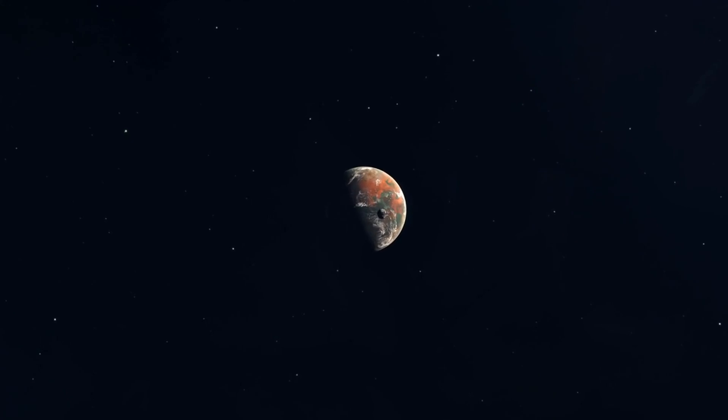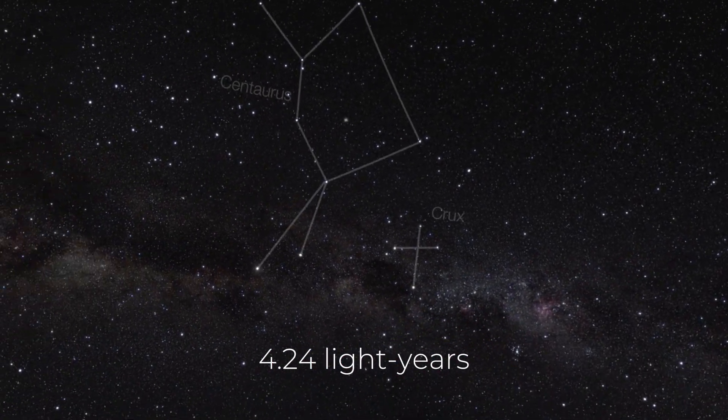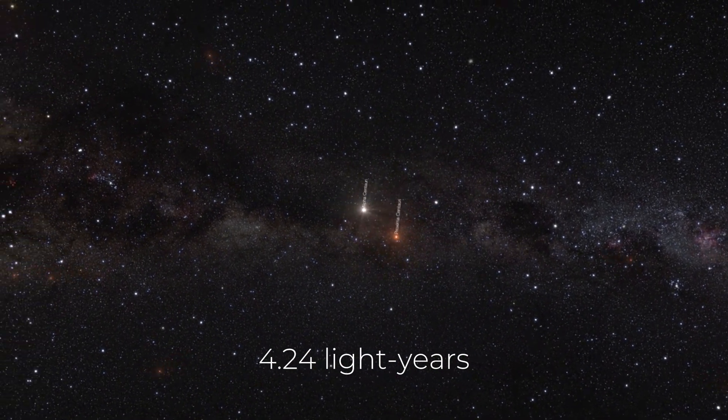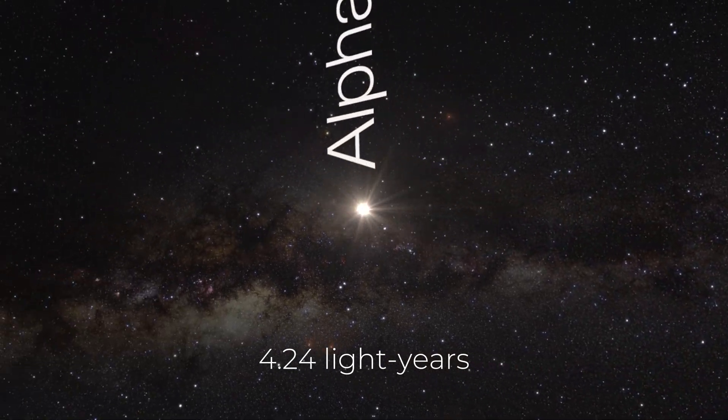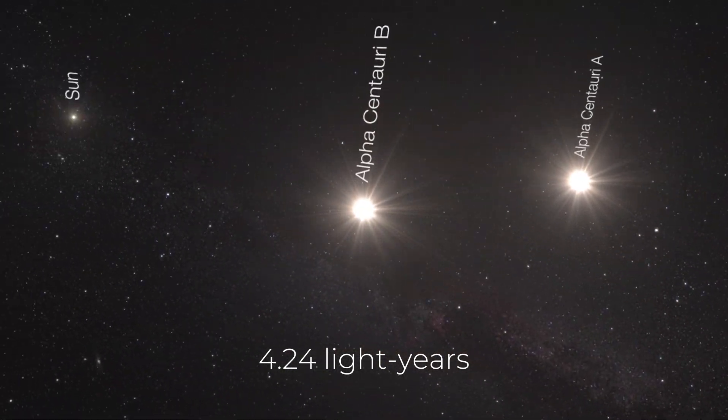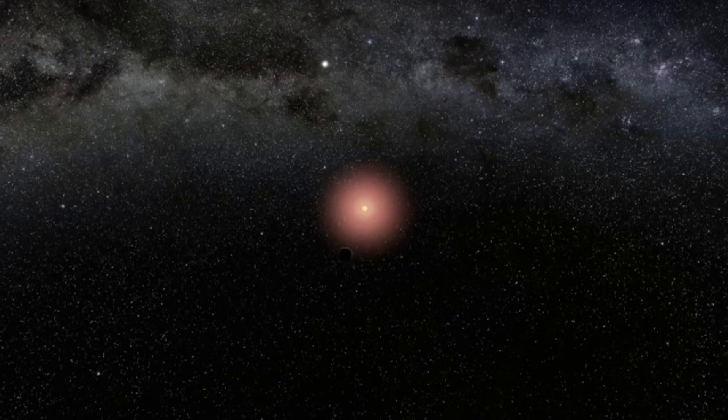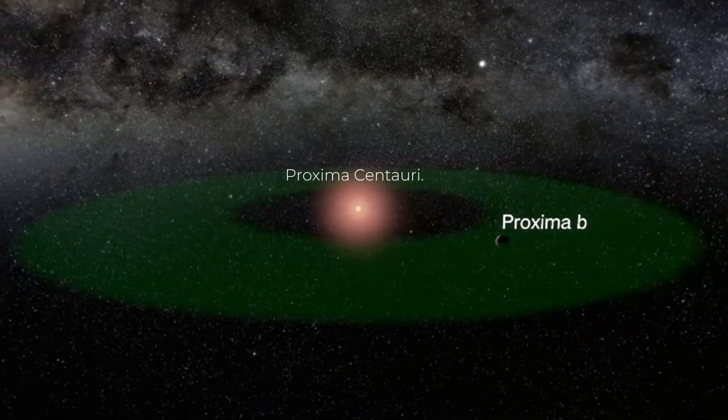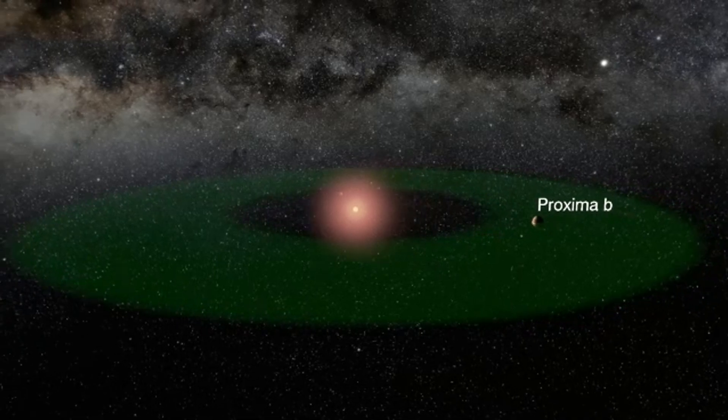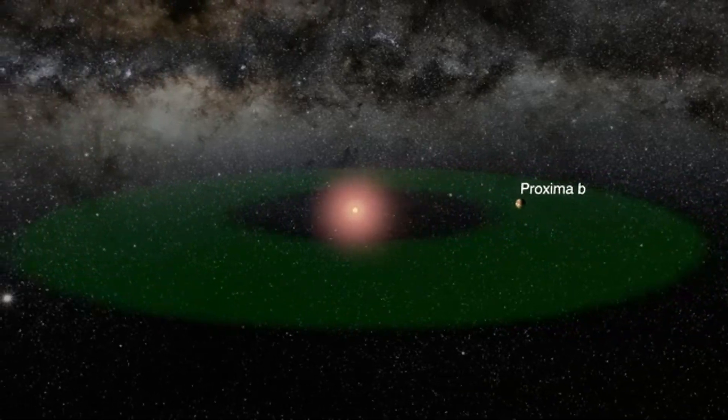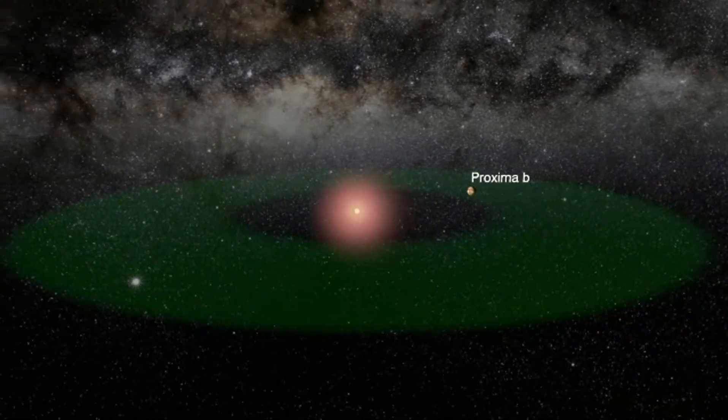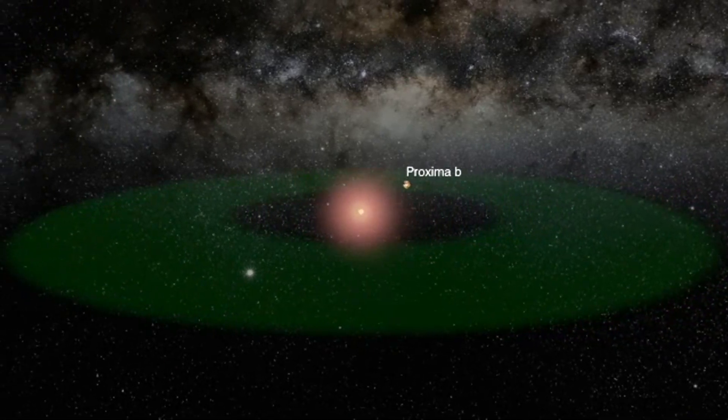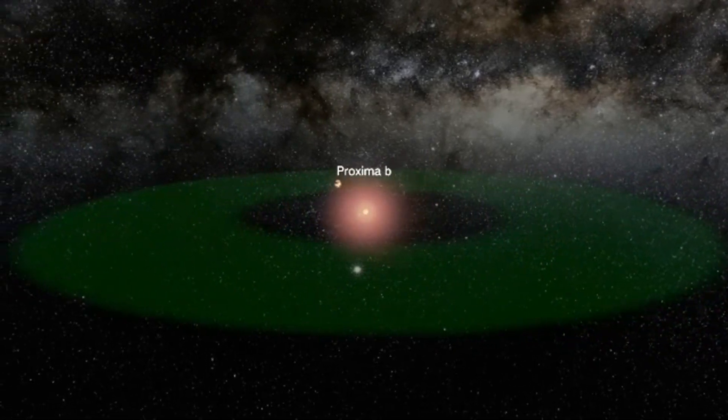First, the basics. Proxima B is located just 4.24 light-years away from Earth. That's pretty close in space terms. It orbits in what's known as a habitable zone around its star, Proxima Centauri. Now, the habitable zone is basically an area where conditions could allow for liquid water to exist, which is one of the key ingredients for life as we know it.